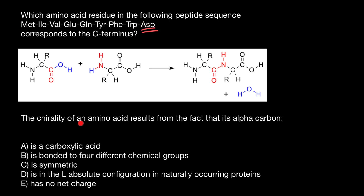The next question: the chirality of an amino acid results from the fact that its alpha carbon — and you have to choose one of the given answers. Let's return to this picture and take a look. The alpha carbon is this carbon here, and you see that this carbon is attached to four different groups: one is the carboxylic acid group, another is the amino group, the third is hydrogen, and the fourth is the R-chain, which is different in each amino acid. The same is true within a dipeptide, where each alpha carbon is attached to four different groups.